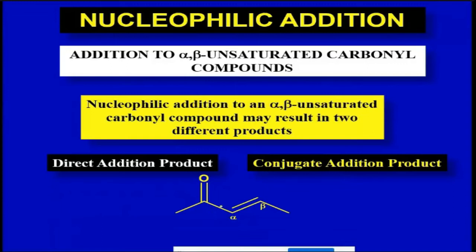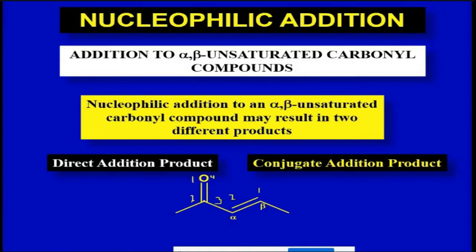When we talk about 1,2 and 1,4 nomenclature, we look at the whole system again. If we start numbering here: 1, 2, 3, 4 — starting from the beta carbon, that is position 4 — that is 1,4-addition. If we start here at 1,2, then positions 3 and 4 follow. So if nucleophile attack is at the beta carbon and protonation is also at the beta end, that is 1,2-addition.